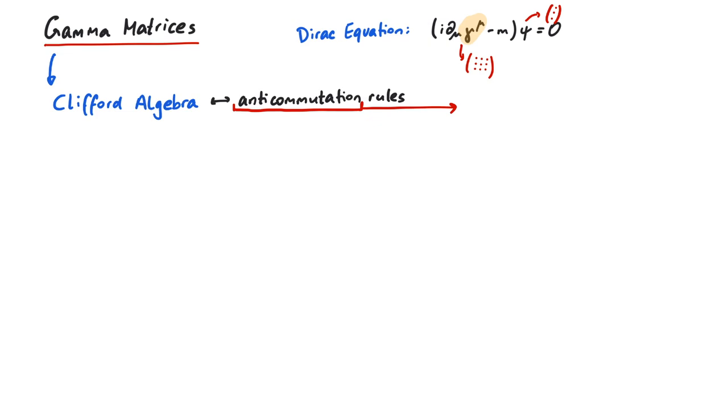An anticommutator between A and B, denoted with curly brackets, is a shorthand notation for AB plus BA. So, the anticommutator between two of Dirac's matrices has to be equal to something.